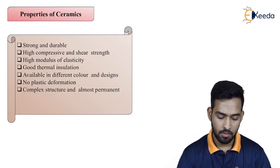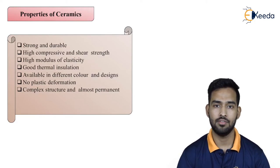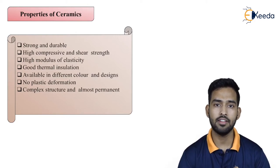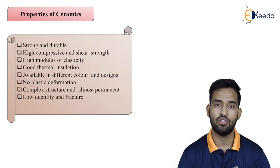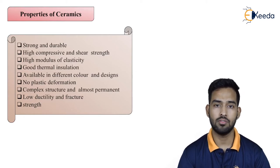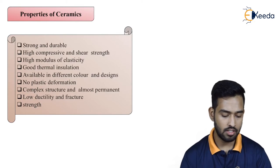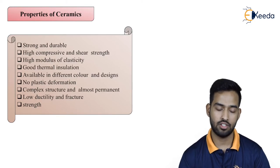They have a complex structure and are almost permanent. They are generally used for complex and permanent structures because we can't reuse the tiles — once they have been used, we can't make reuse of them. Next is low ductility and fracture — they generally have very low ductility and fracture strength. The strength of these materials can be increased depending upon their uses and thickness. So these are some properties of ceramic materials which make them very useful in construction.